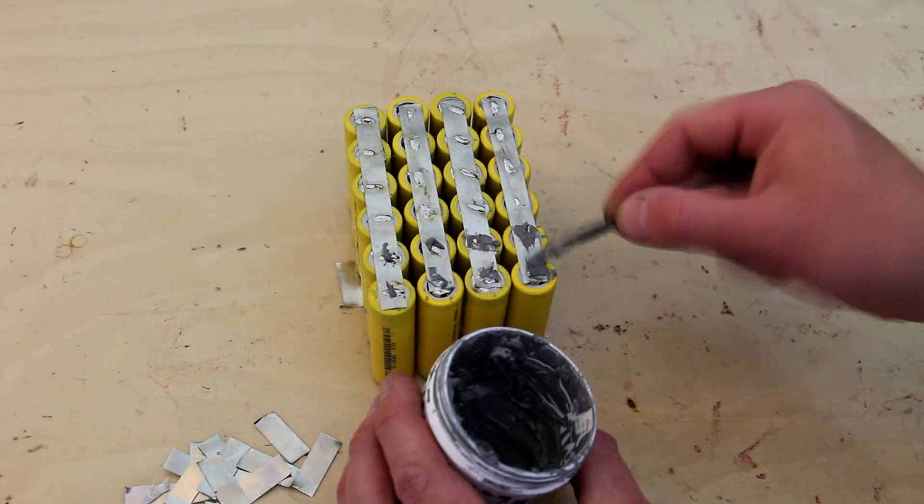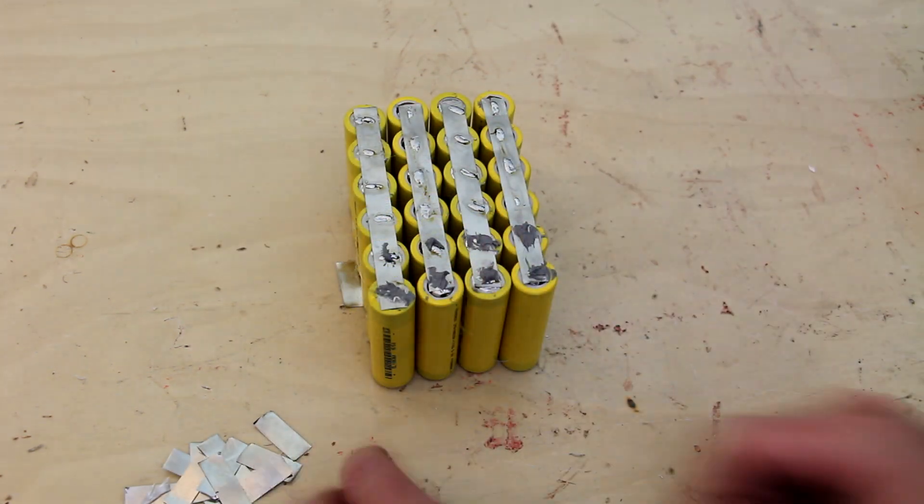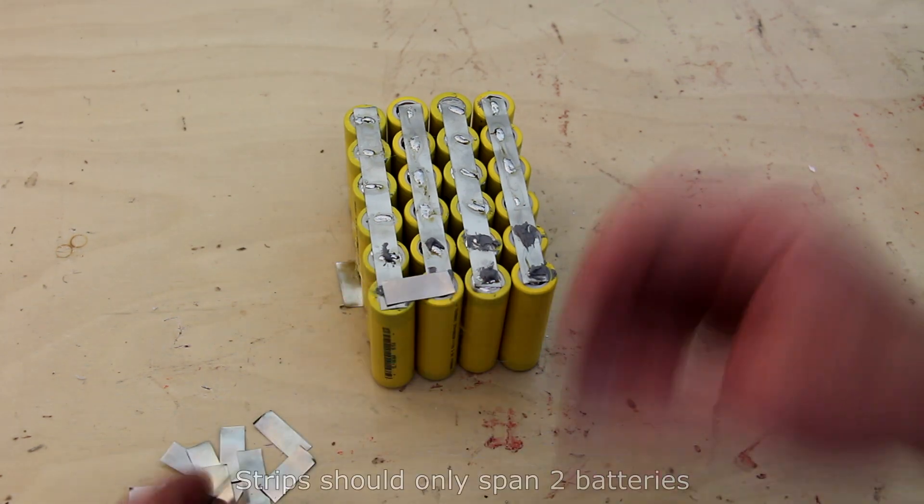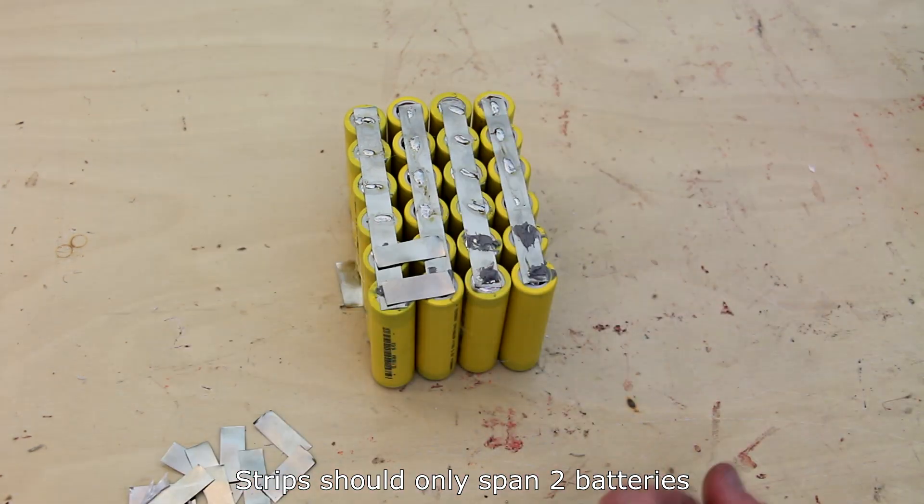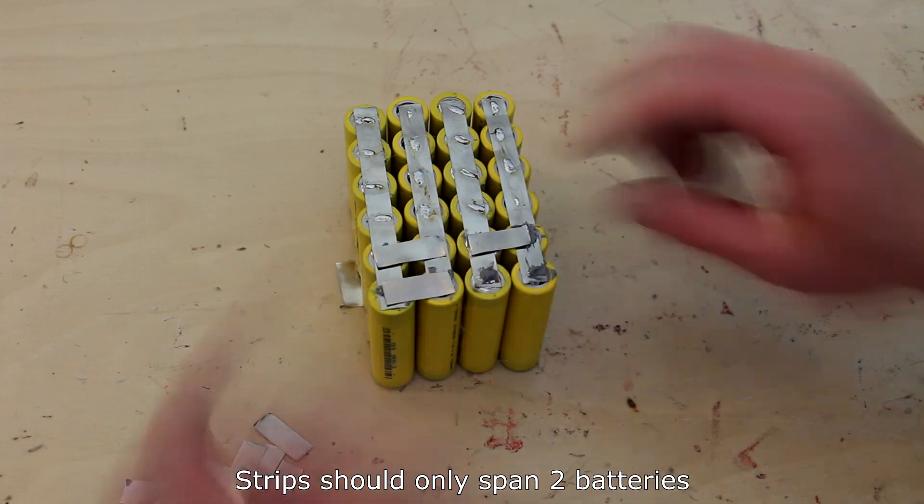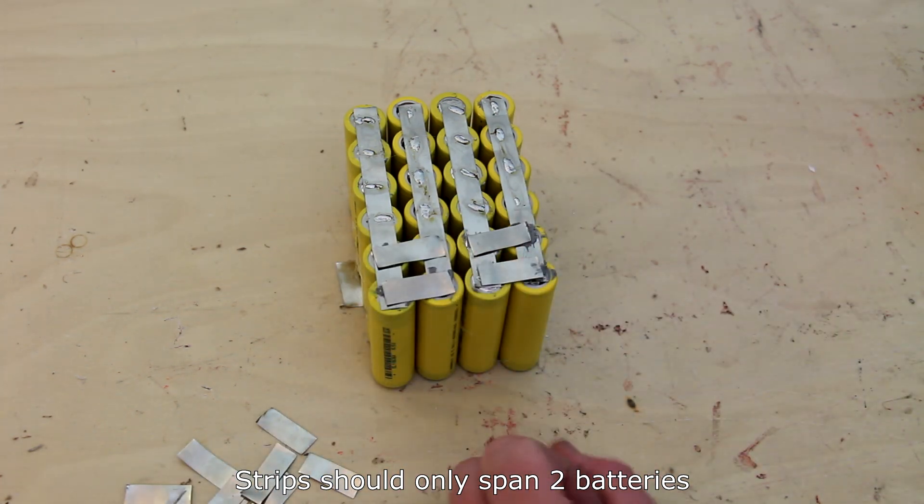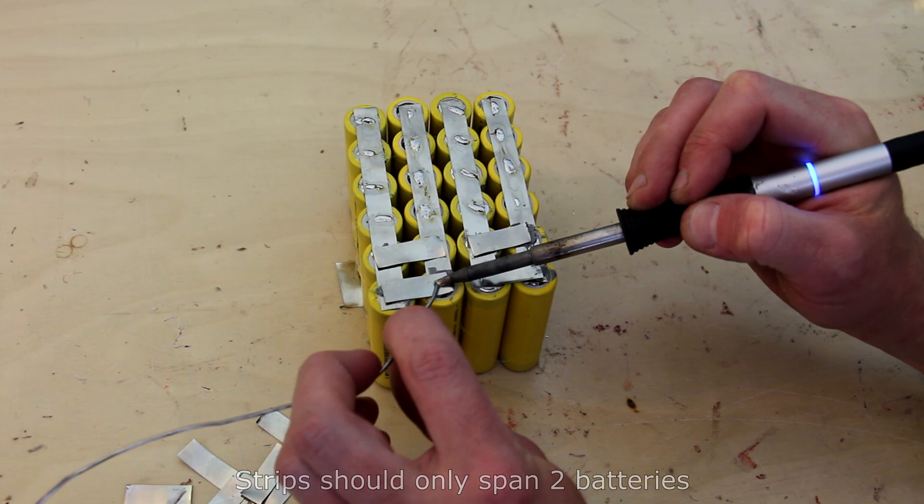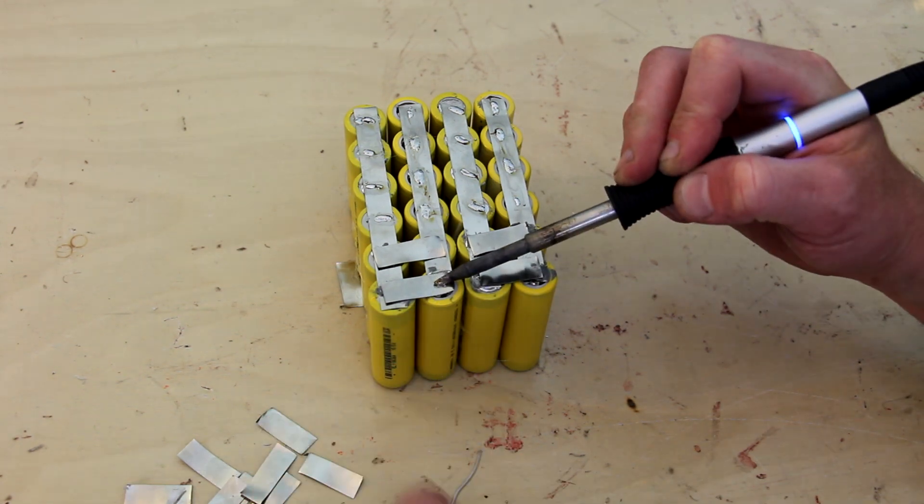Now I'll need to electrically connect these batteries in series. Again I'm using solder paste and nickel strips. You'll note the nickel strips are cut just barely long enough to cover two batteries. I'm going to use two of these on each end of the cell pack to be sure I can deliver enough current to crank over my motorcycle.